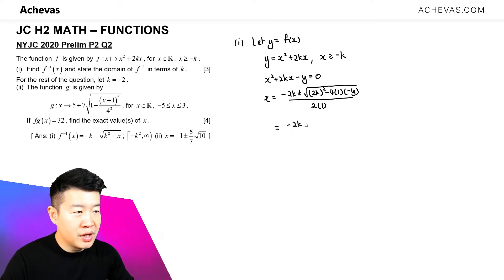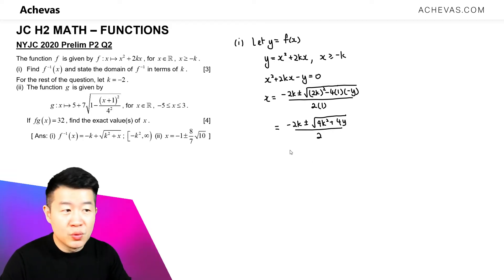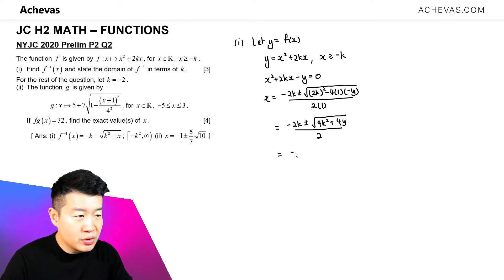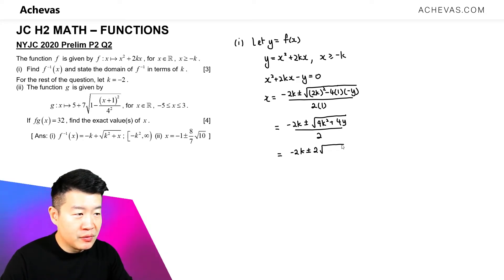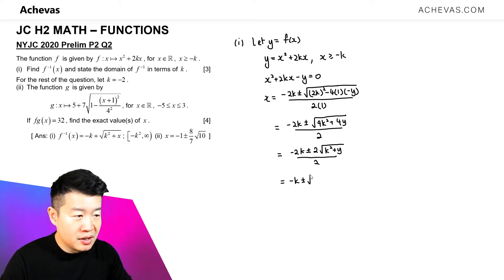So we have minus 2k plus or minus the square root of 4k squared plus 4y, divided by 2. This simplifies to minus 2k plus or minus — factorizing out 4, the square root of 4 gives us 2 — so we're left with square root of k squared plus y, divided by 2. Which means x is equal to minus k plus or minus square root of k squared plus y.